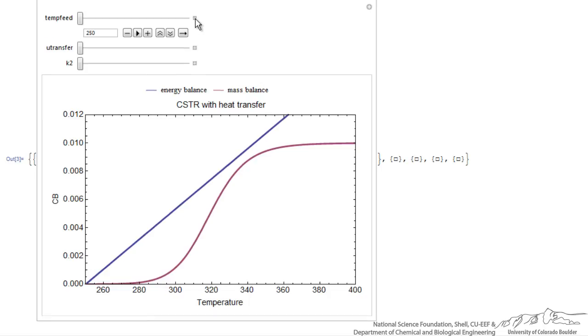I can look at varying the feed temperature. If I move this slider and increase the feed temperature, notice I'll get to the point where I have more than one intersection. For a feed temperature of 266, I have three intersections.